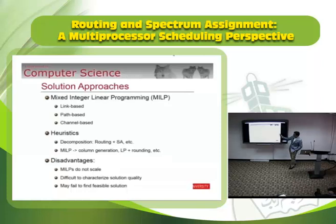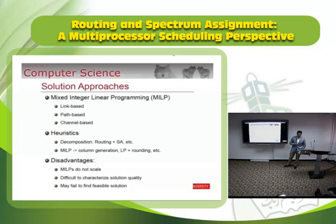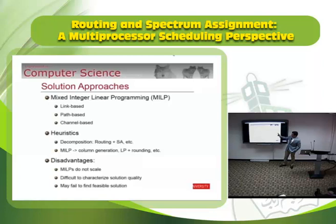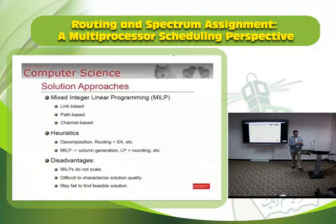Looking at the universe of approaches: one is to find exact solutions using Integer Linear Programming (ILP) formulations — link-based, path-based, or channel-based. The main issue with ILPs is they don't scale; papers typically demonstrate results only on five-node toy networks. The alternative is heuristics, which often decompose the problem — solve routing first, then spectrum assignment using policies like random or first-fit — or relax integer constraints to get a linear program, solve it quickly, and then round back to integer solutions.